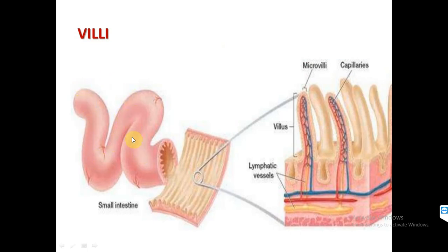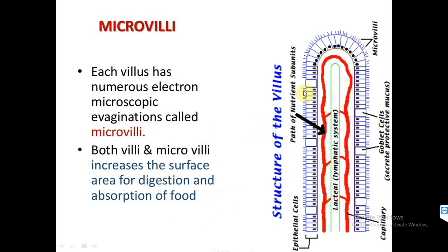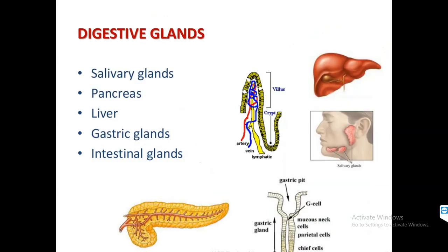Looking at the villus present in the mucosa of the small intestine, the mucosa layer is on the inside of the villus. Villi are supplied with lymphatic vessels. Each villus has numerous microvilli — these are electron-microscope-level evaginations (folding outward) on the surface of the villus. Many microvilli make up one villus. Both villi and microvilli increase the surface area for digestion as well as absorption of food.